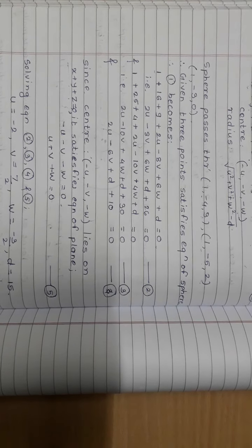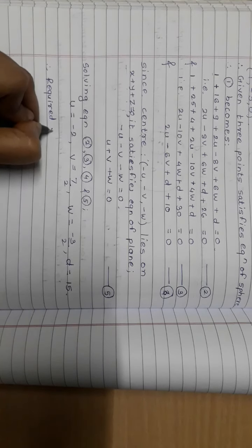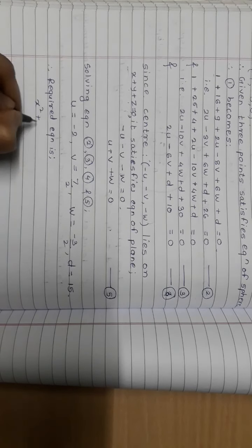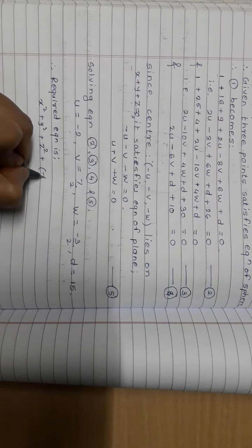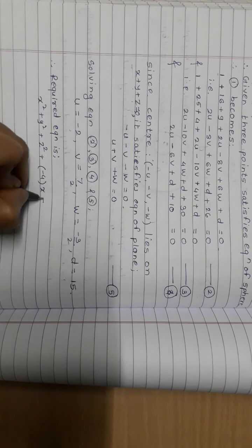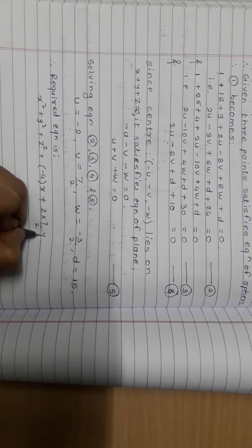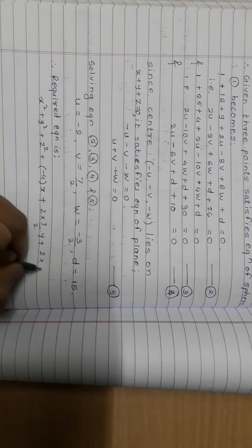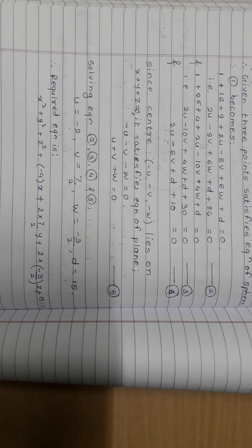You can verify these values. Substituting u, v, w, and d back into equation 1, the required equation of the sphere is: x² + y² + z² − 4x + 7y − 3z + 15 = 0. This is the required equation of the sphere.